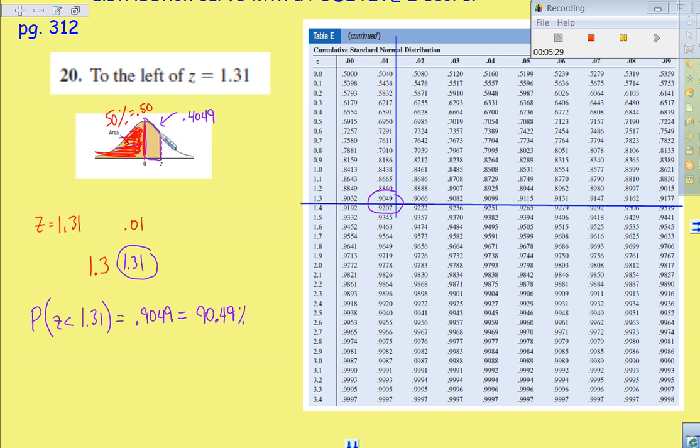You add that 50% on to it, so you take that 0.4049, you add on the 0.50, and you come out with your 0.9049.